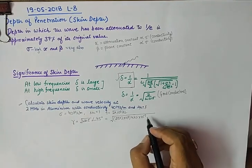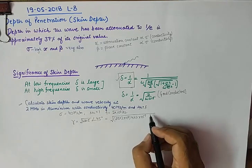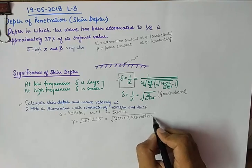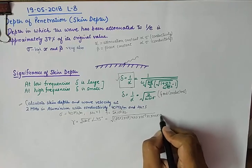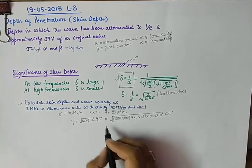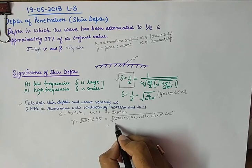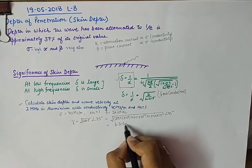4 pi into 10 raised to the power minus 7 is the value of mu naught. And then, after calculation we get this value.